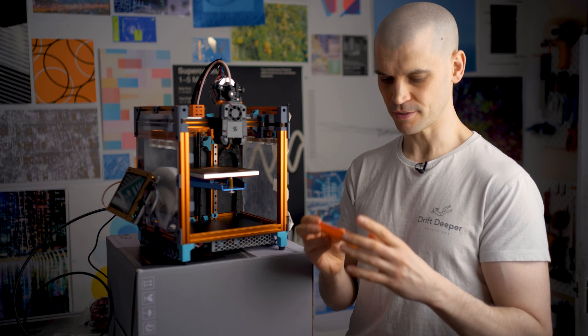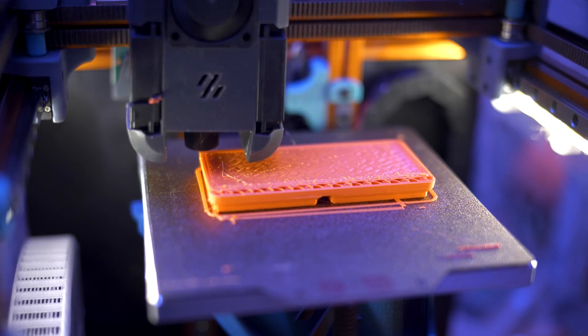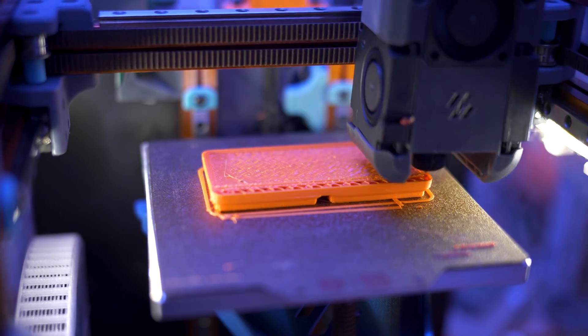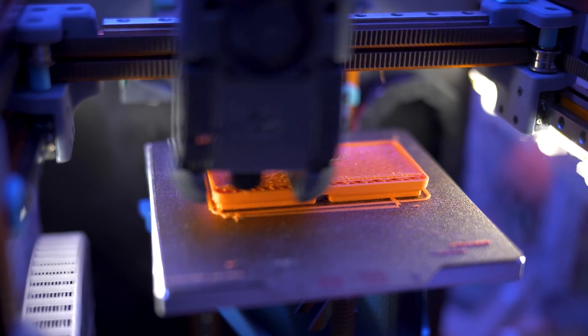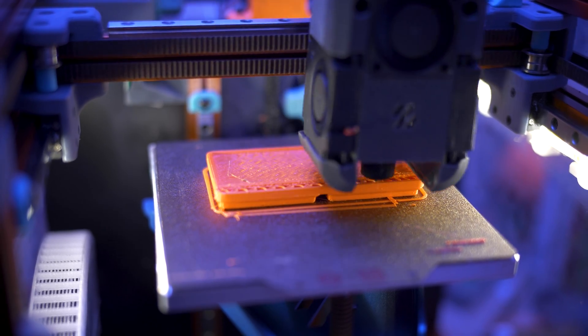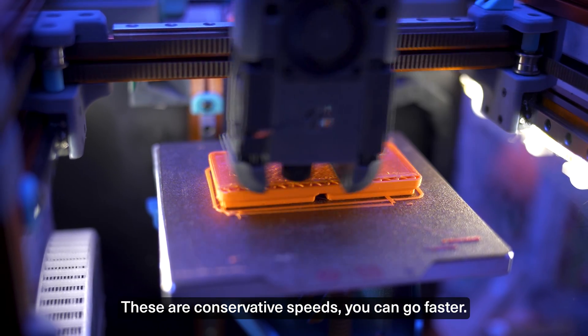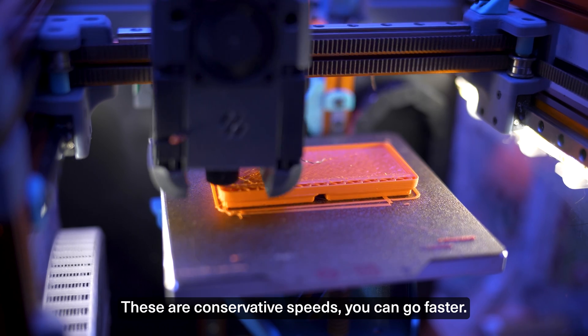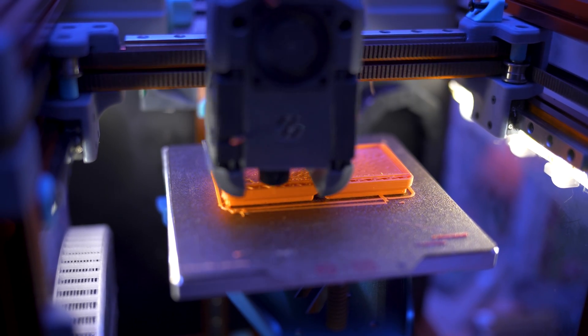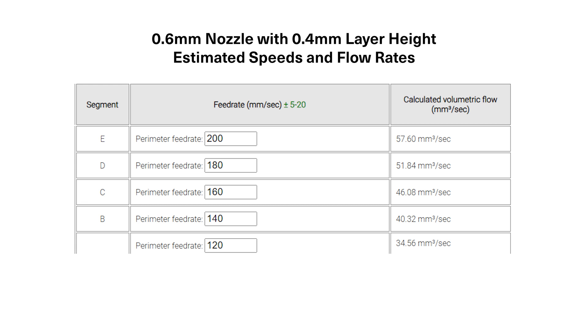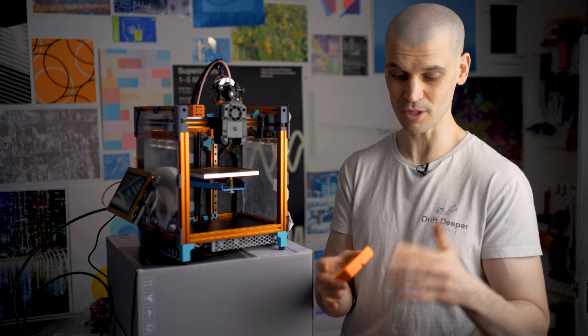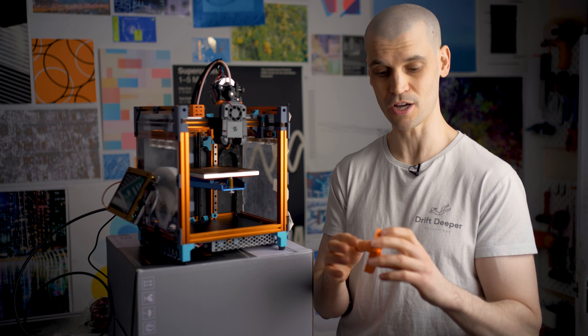So I don't think these 4010 fans are going to be powerful enough to be printing flow rates any higher than this. But what does that mean in real world prints? Well basically it means that I can now print 0.6 millimeter nozzle with a 0.4 millimeter layer height and I can print at about 150 to 160 millimeters per second print speed and what that results in is pretty much a 30 to 40 percent reduction in the print time which is really all I care about.